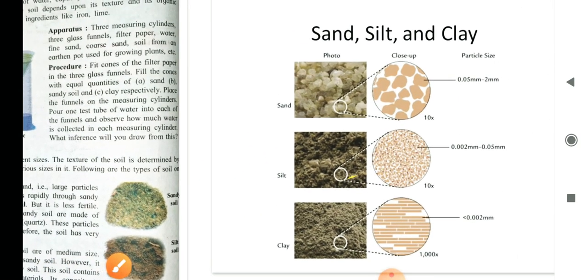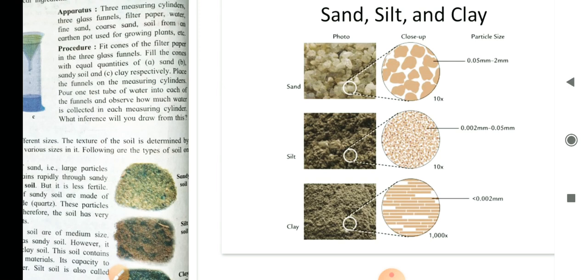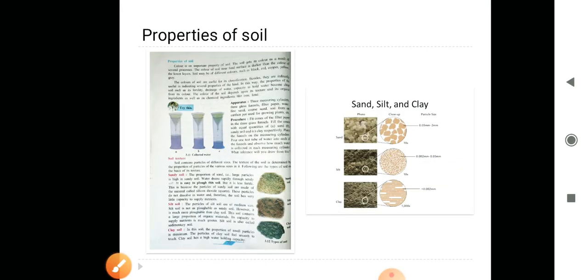Now, in the slide you can see sand, silt and clay. The different particle size is seen here. In case of sandy soil, it is 0.05 mm to 2 mm. In case of silt, it is 0.02 mm to 0.05 mm. And in case of clay soil, it is less than 0.002 mm. I hope you have understood the different types of soils based on the texture.